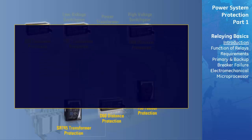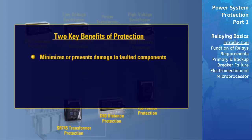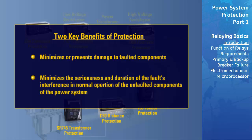Two benefits of this quick isolation are: first, it minimizes or prevents damage to the faulted component, thus reducing the time and expense of repairs, and permits quicker restoration into service. The second benefit is that the quick response minimizes the seriousness and duration of the fault's interference with normal operation of the unfaulted parts of the system, allowing them to continue to supply their normal power.